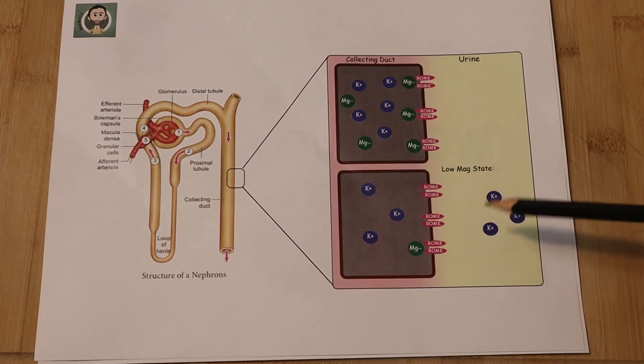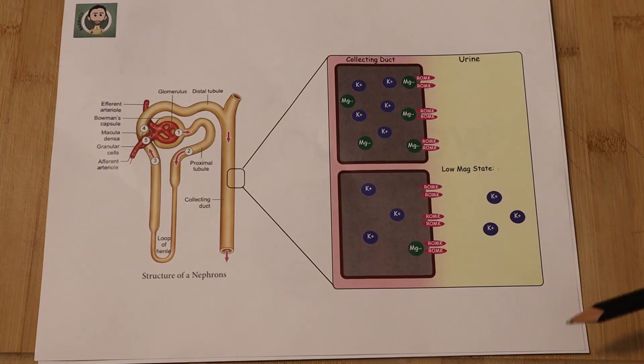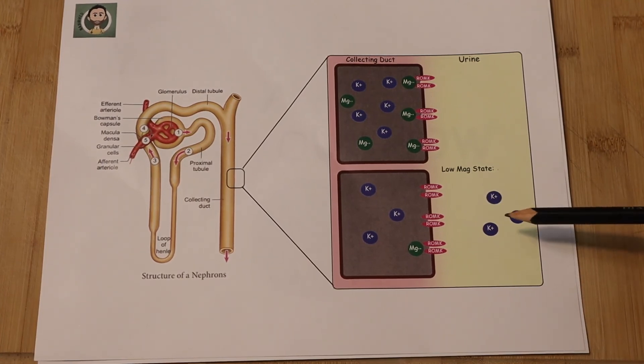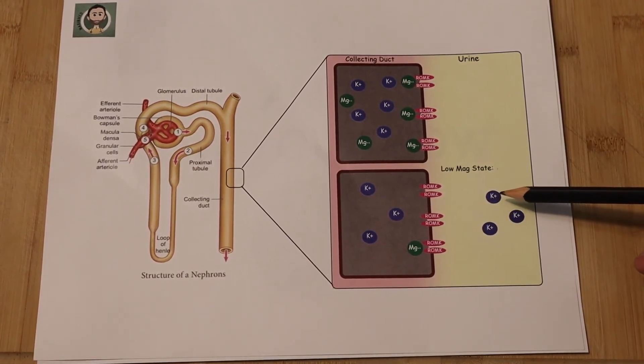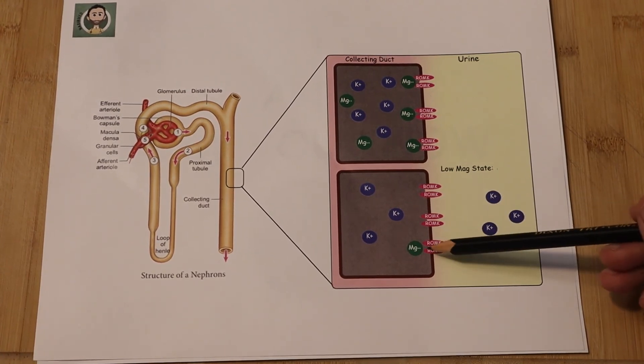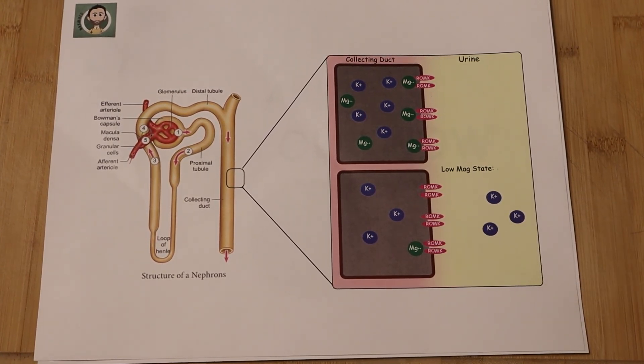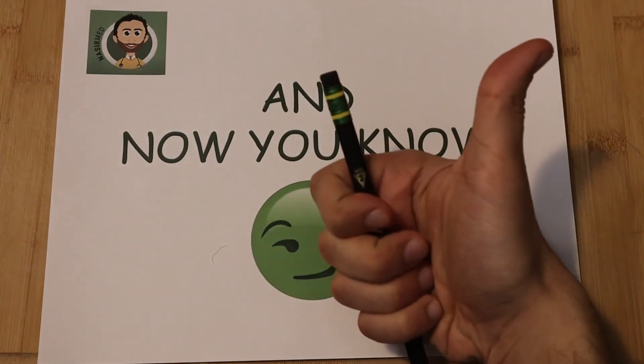And that's when you start noticing that your potassium level will start improving. So the next time you notice that your potassium level is persistently low, check the magnesium and replete that. And that will resolve your problem. And now you know why.